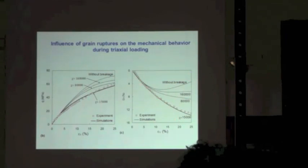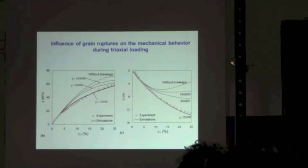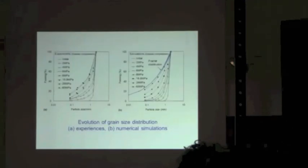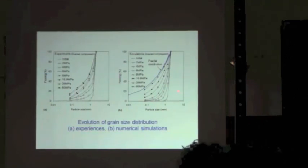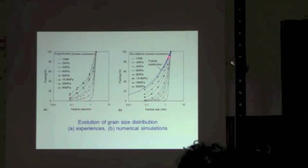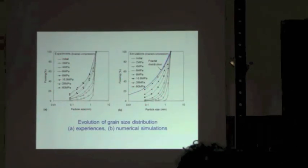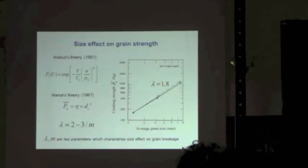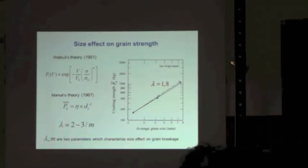Without breakage the material will be dilatant; with breakage it becomes quite contractant. At the same time, using the work of Einav, we can compute the grain size distribution evolution. Here you have the experimental results and here the simulation. The blue line corresponds to the ultimate grain size distribution, considered here as a fractal. This is the first part: introducing the effect of grain breakage inside the model.